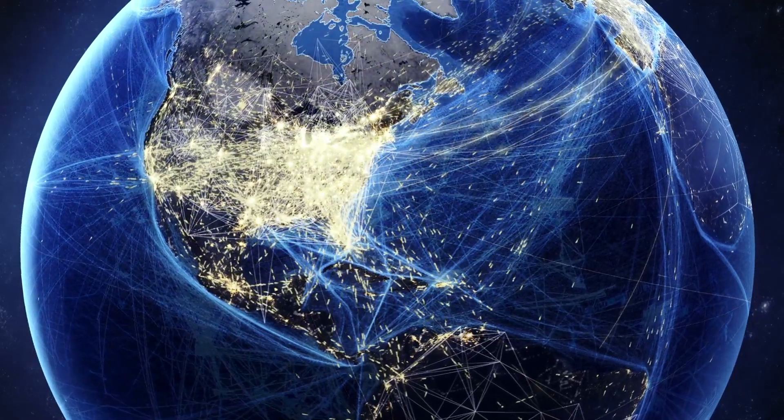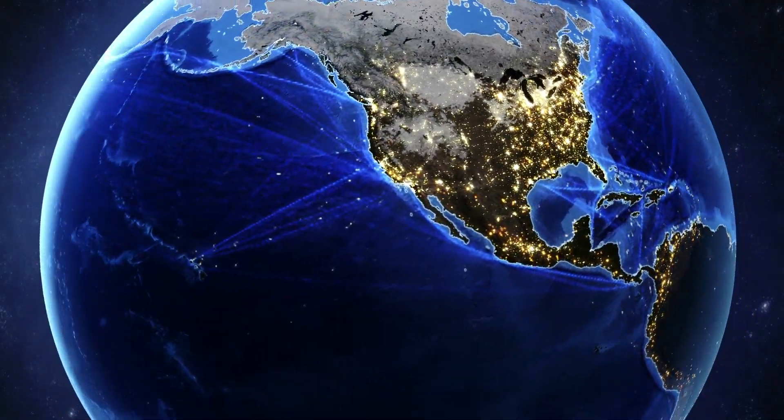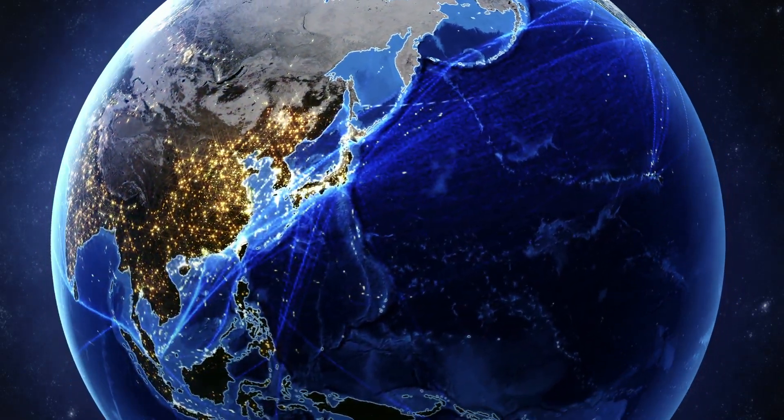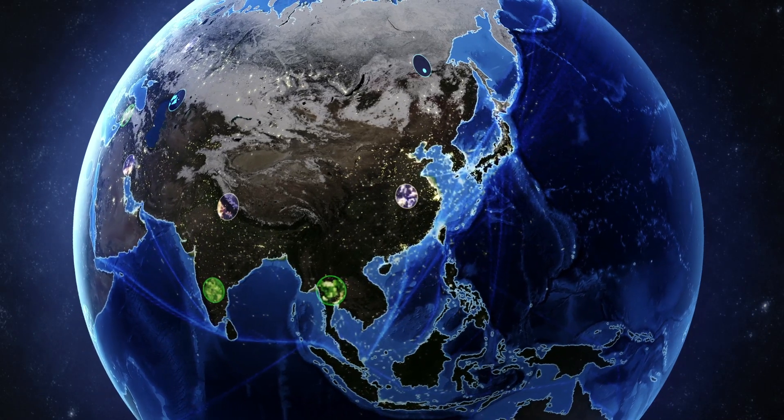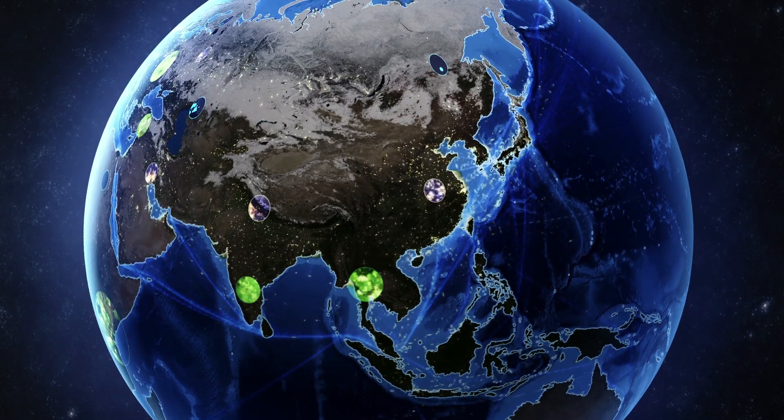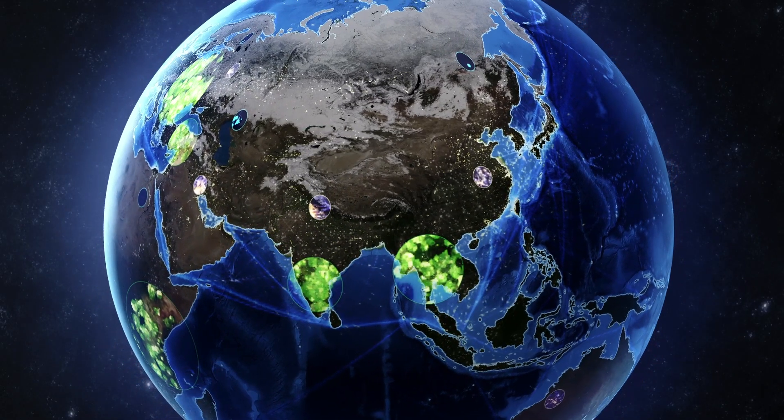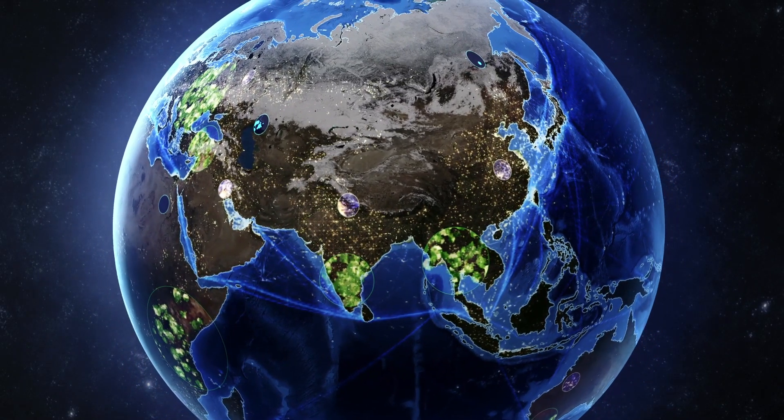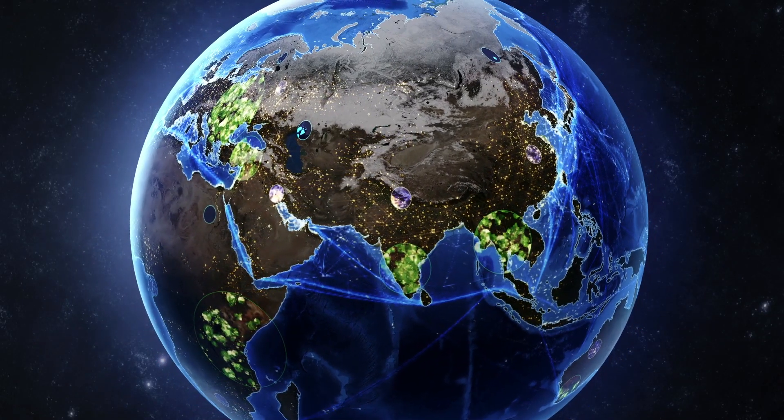Two billion more people by 2050. Three main challenges: by 2030 we'll need to produce 50% more food to feed the growing population. By 2050, 75% of people will live in cities—that means a lot more energy for daily living.